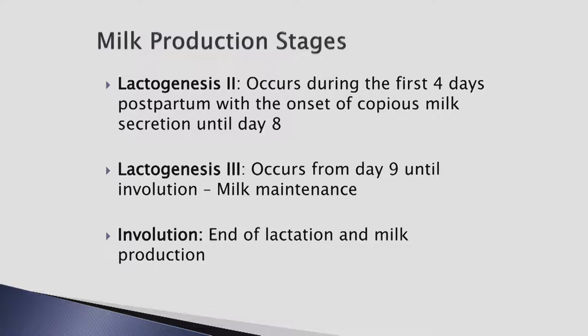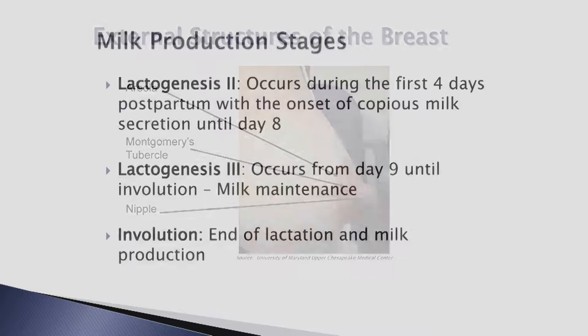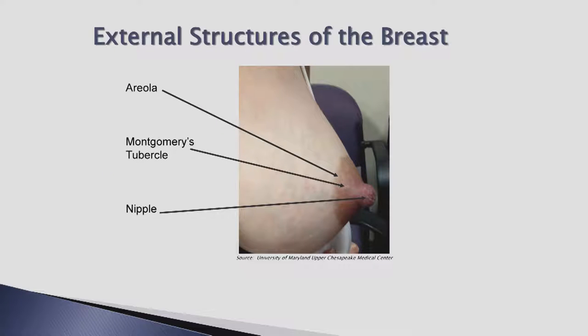Early in pregnancy, the mother notes changes in her breasts, including fullness, tenderness, and increased vascularity. As the pregnancy progresses, the areola enlarges and darkens in color. Montgomery tubules, a sebaceous gland, are small nodules within the areola that become more prominent and secrete a lubricating substance that protects and conditions the nipple and areola. The Montgomery tubules may also provide a scent that guides the baby to the breast.